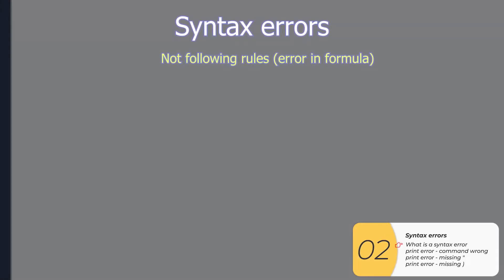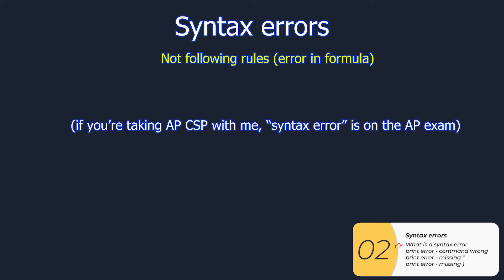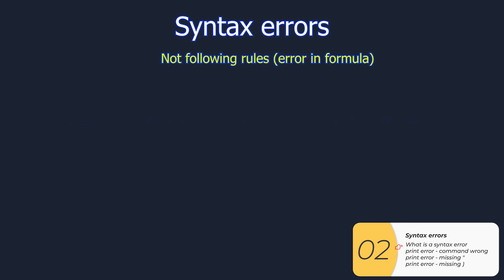Bugs get classified into a lot of different categories. The first type you're going to run into is called a syntax error, and all that means is that you're not following the rules of the computer language — it's like having an error in your formula somehow. If you're taking the AP CSP exam, the term syntax error might show up. The syntax error is by far the most common type of mistake when you're starting out, and here are some examples.